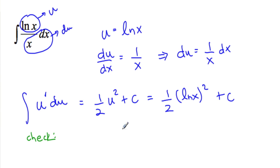So the derivative of this, you bring down the 2. So we have 2 over 2 ln x to the 1 times the derivative of the inside, which is 1 over x. And you can see this simplifies to ln x over x. And we're done.